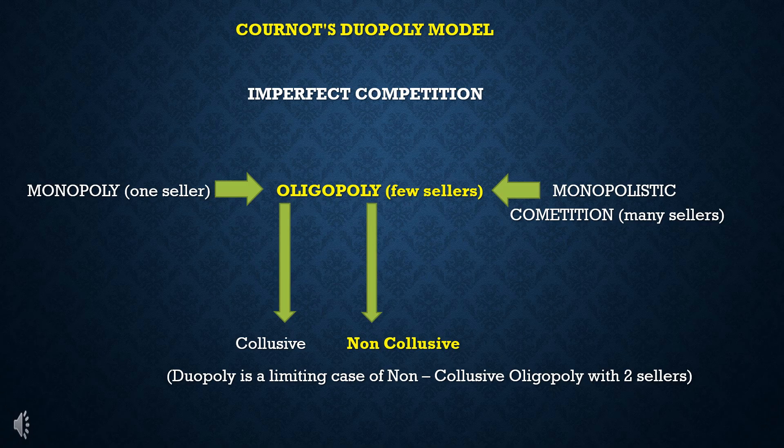Examples of Oligopoly include automobile manufacturers, airlines, petrochemical companies, and pharmaceutical companies. There are only a few sellers in these markets, which is why they are considered Oligopoly examples.